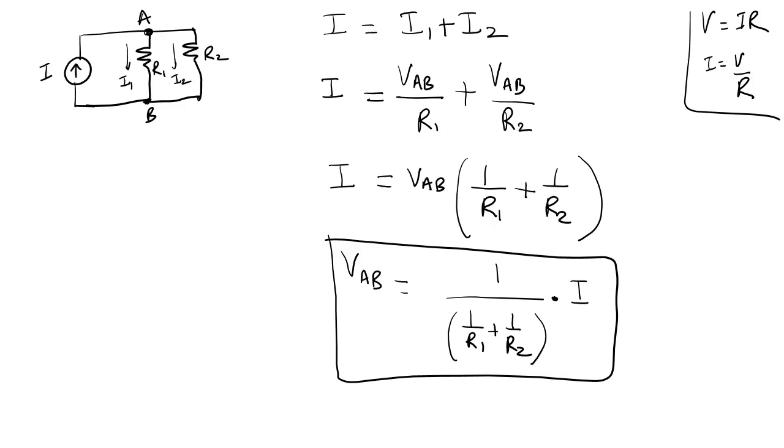Now let's go and look at, let's say I wanted to find out what is the current I1. So I want to find out what is I1. Well, I1 is VAB divided by R1. We just found out what VAB was. So VAB is essentially 1 divided by 1 over R1 plus 1 over R2 times I. And then whole thing divided by R1. So the current I1 can be given as 1 over R1 divided by 1 over R1 plus 1 over R2 times the total current coming in.